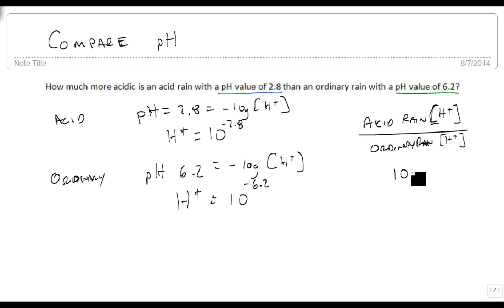And that's going to be 10 to the minus 2.8 over 10 to the minus 6.2. And so what we get is 10 to the minus 2.8 minus a minus 6.2, which is 10 to the minus 2.8 plus 6.2. And 6.2 minus 2.8 is 3.4. So it's 10 to the 3.4 times more acidic than ordinary rain is.